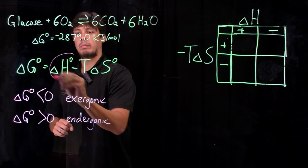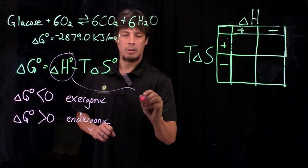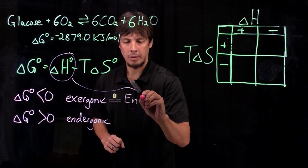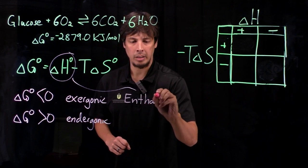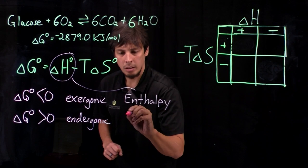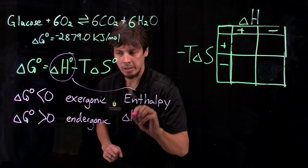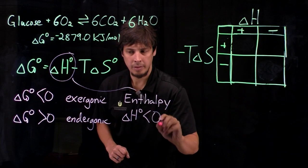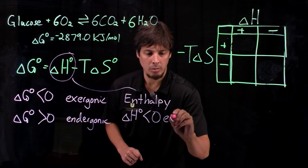The second term is the enthalpy term. We call that enthalpy. If delta H is less than zero, this is exothermic.